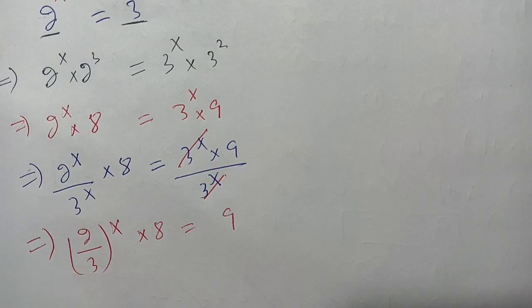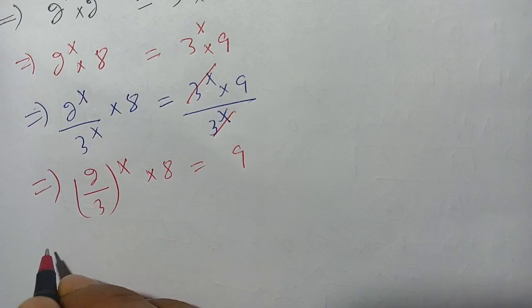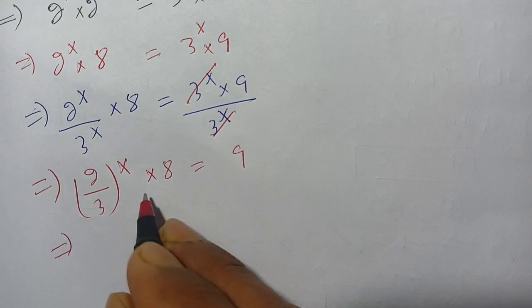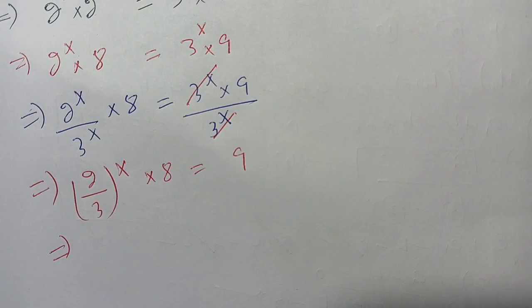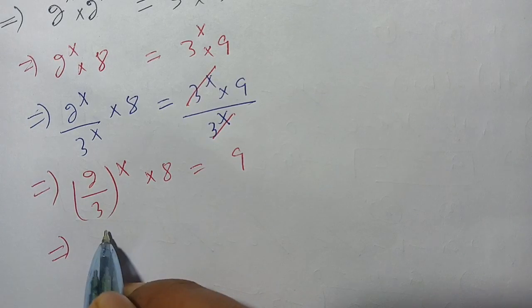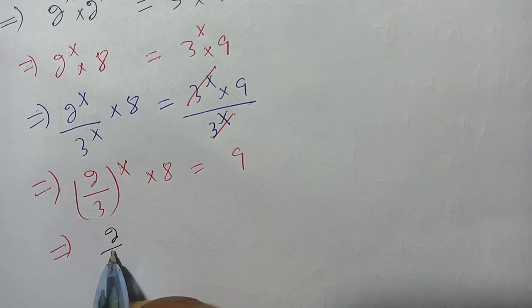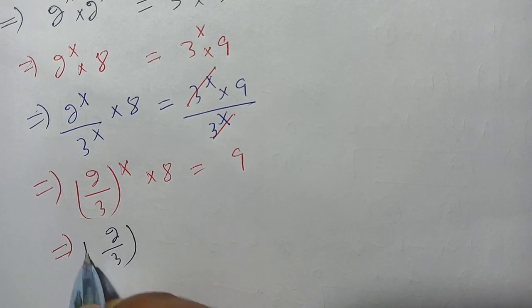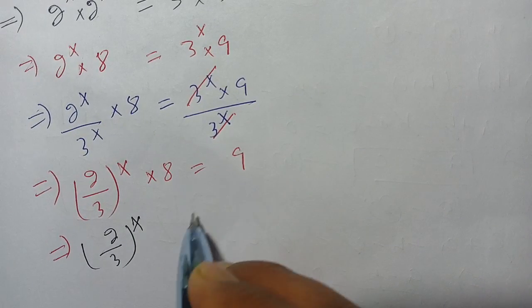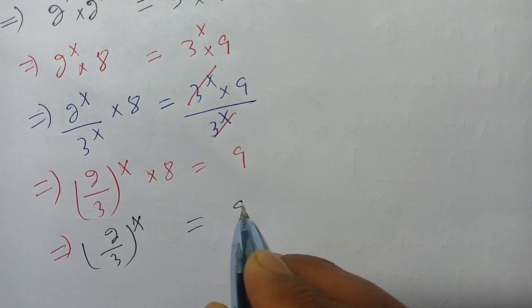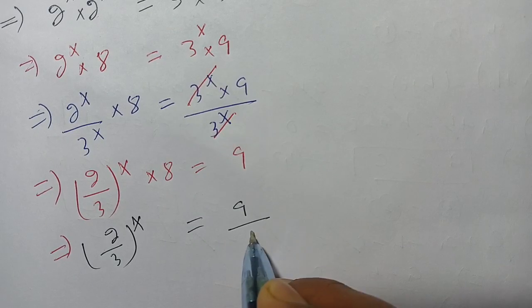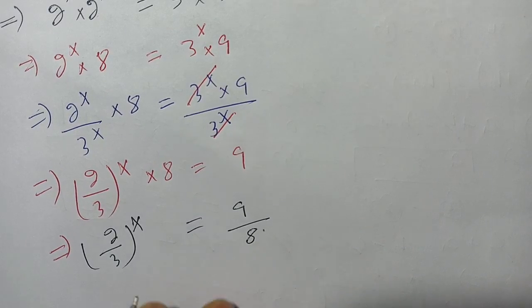Now on the next step, dividing both sides by 8, we get (2 divided by 3) whole power x is equal to 9 divided by 8.